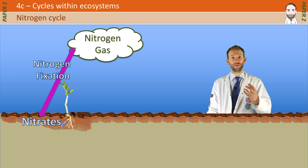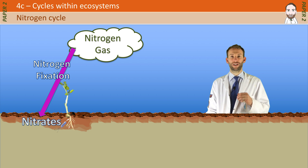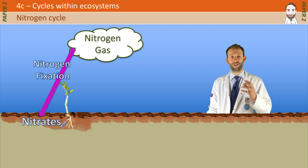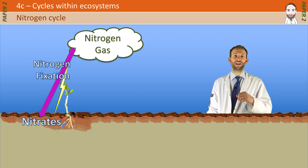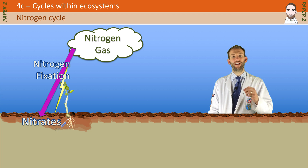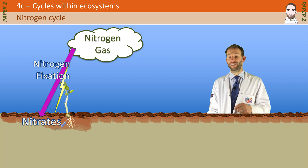Nitrogen fixation also occurs when lightning strikes the ground — you get nitrogen gas being fixed as well. The key point is that bacteria and lightning can cause nitrogen gas to be converted into nitrates, and plants can use nitrates — they can't use nitrogen gas, but they can use the nitrates.